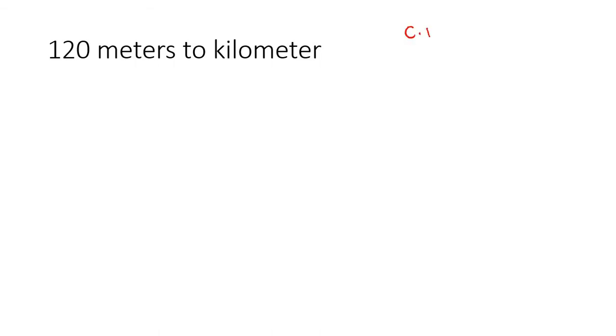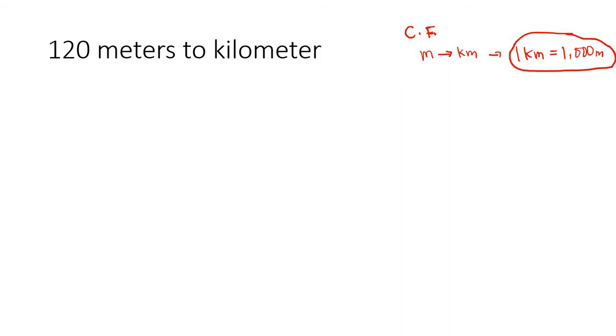For our first problem, we are going to convert 120 meters to kilometers. The first thing you're going to do in converting is identifying the conversion factors — we'll write CF here. To know what conversion factor to use, identify the related units: meters and kilometers. The conversion factor is 1 kilometer equals 1,000 meters. We will use that in converting.